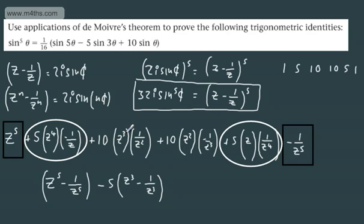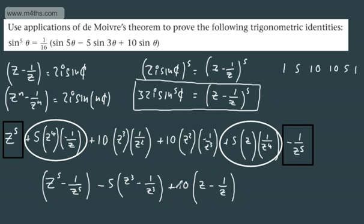For the middle terms: z cubed times 1 over z squared is z, and z squared times negative 1 over z cubed is negative 1 over z. So at this point we have 10 times the quantity z minus 1 over z. And we know all of this is equal to 32i sine to the fifth theta.